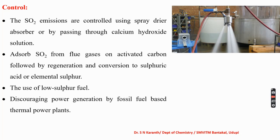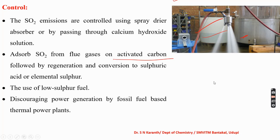Sulfur dioxide emissions are controlled by using a spray dryer absorber or by passing through calcium hydroxide solution. Activated charcoal or activated carbon can absorb sulfur dioxide from flue gases, followed by regeneration and conversion to sulfuric acid or elemental sulfur. Use of low-sulfur fuel and discouraging power generation by fossil fuel-based thermal power plants are also important controlling methods to reduce sulfur dioxide and sulfur trioxide entering the atmosphere.